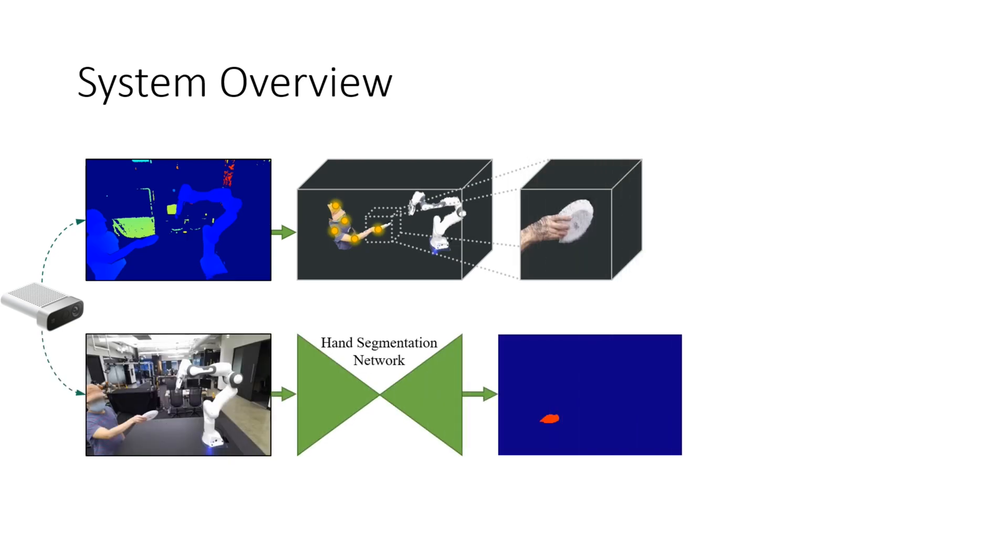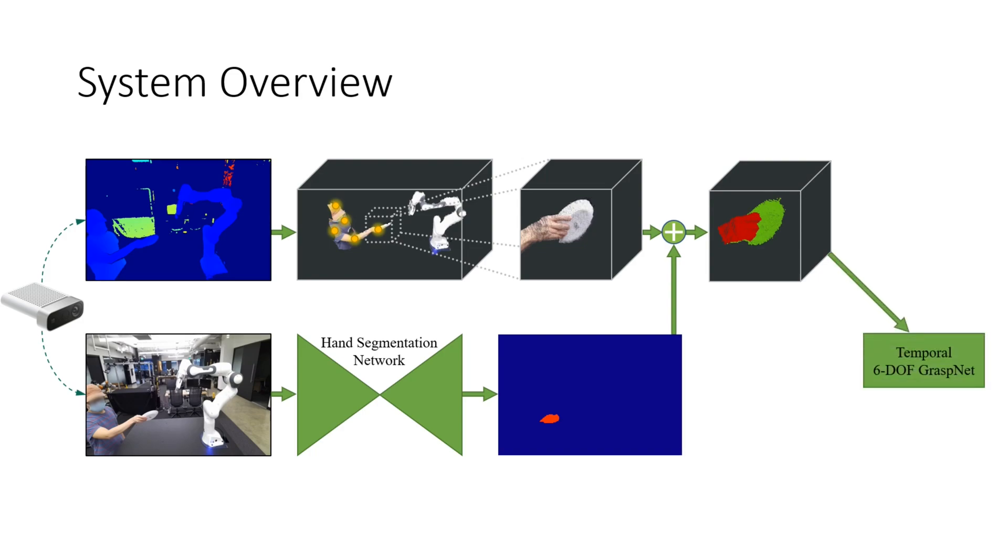At the same time, we use the hand segmentation network to decide which pixels belong to the human's hand versus the rest of the scene. Together, we get a segmentation mask of which points belong to the hand and which points belong to the object.